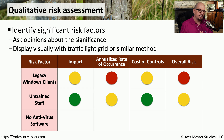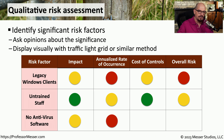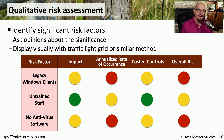In our organization, we might have cases where we have devices that have no antivirus software running. This may have a medium impact, have a large annualized rate of occurrence, a medium cost of controls, and we might set an overall risk value to be very high. This process of setting qualitative analysis can be done on any risk factor across many different categories, and it's designed to give us a high-level view of where we might focus our efforts to resolve these problems.